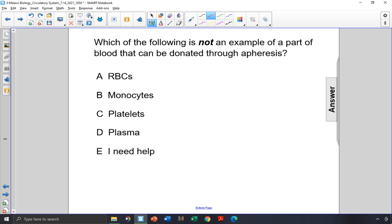Which of the following is not an example of a part of blood that can be donated through apheresis? That is, to take blood out of a patient and give it back to them.